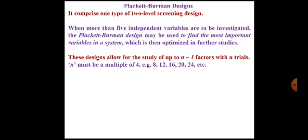This is the characteristic of this design: study of n minus 1 factors with n trials. That means if there are 7 factors, you need to perform 8 trials to evaluate those 7 factors. But n must be a multiple of 4 — that means it should be 8, 12, 16, 20, 24, and so on.